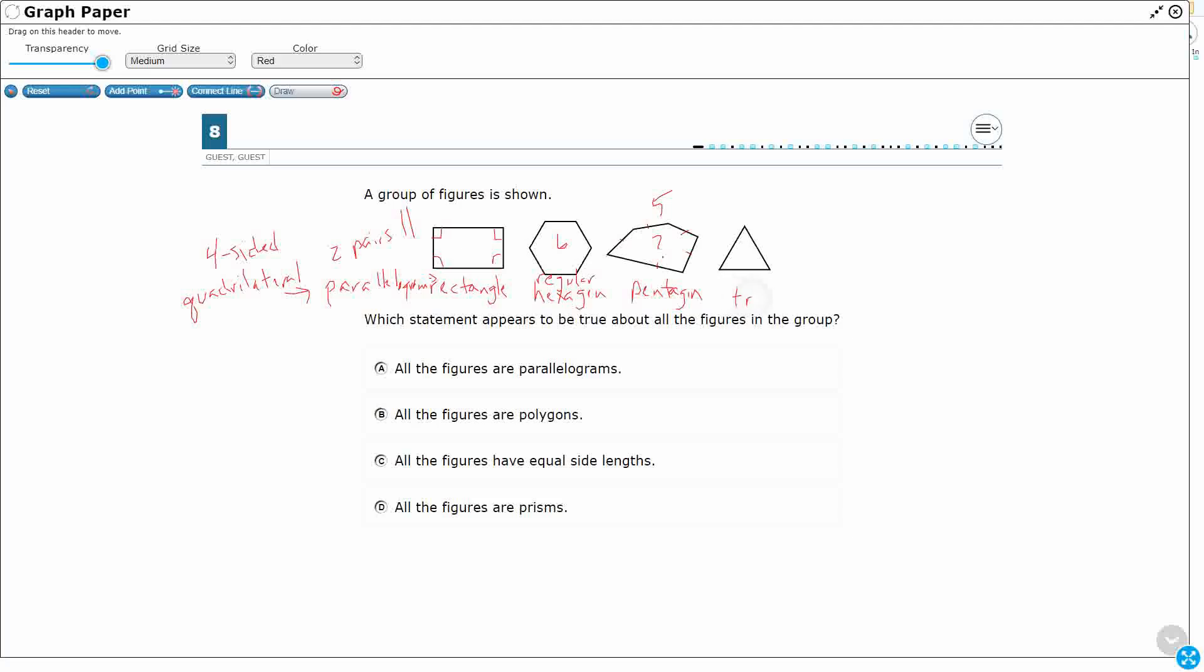And then this is a triangle. But it looks like, if we can assume that all three sides are the exact same length, this is a special triangle called an equilateral triangle. It means all three sides are the same length and all angles are the same measure. All right, so now that we've named all of our shapes, let's take a look.